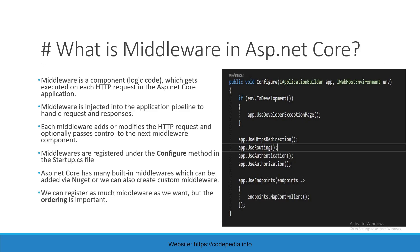We can register as many middleware as we want, but the ordering is important. As you can see here, app.UseAuthentication should be above app.UseAuthorization, so this order must be maintained.